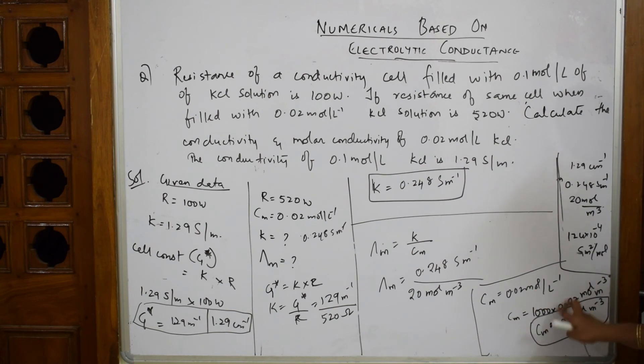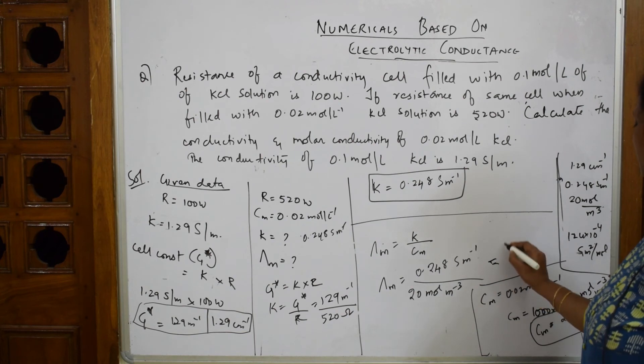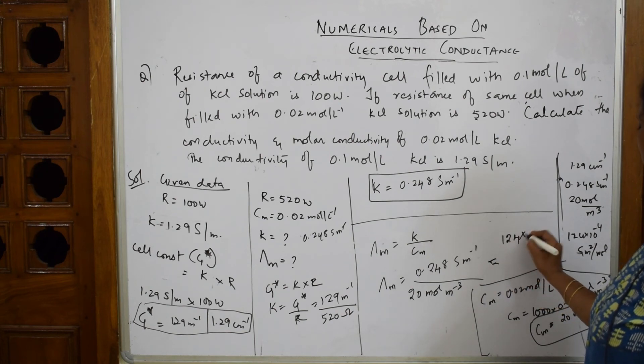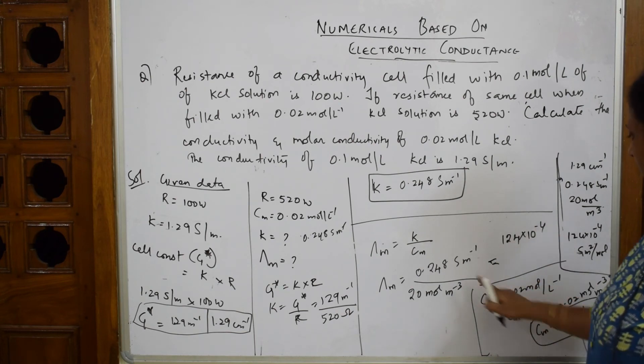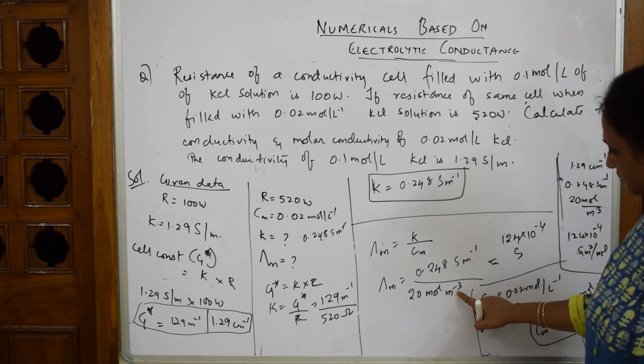Mole per liter multiplied by 1000 converts to mole per meter cubed. When you multiply everything, molar conductivity equals 1.24 × 10⁻² S·m²/mol.